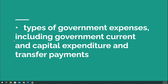Hello, economics students. Now that we know where the government sources its revenue from — mainly taxes — we're going to think about the other side of the budget, which is what does the government spend that revenue on? That is called our expenses, or our government expenses. Remember, the budget is split into two sides: revenue and expenses.